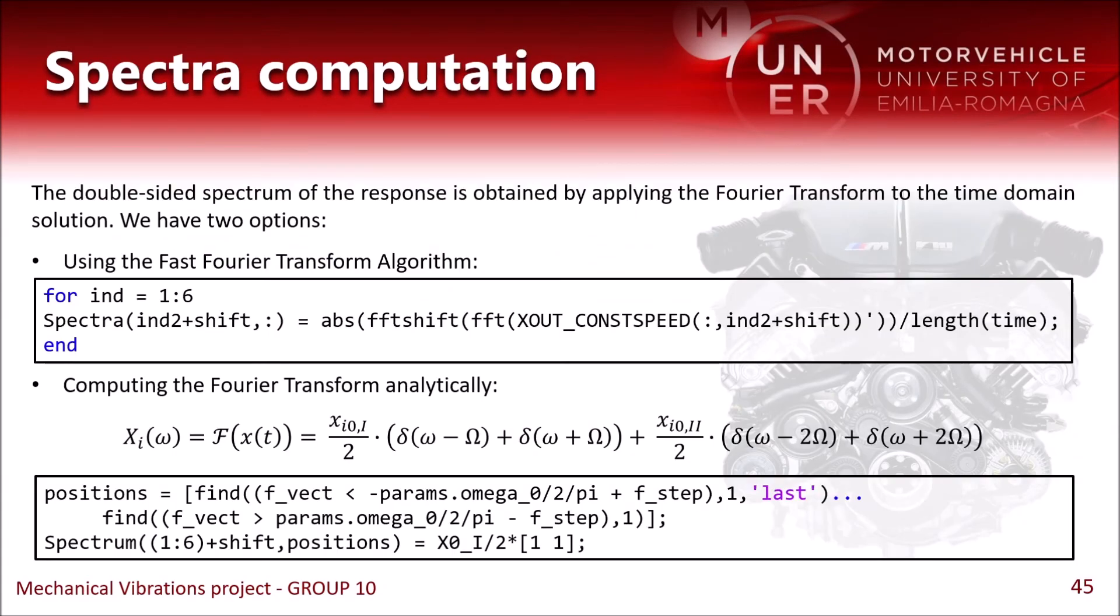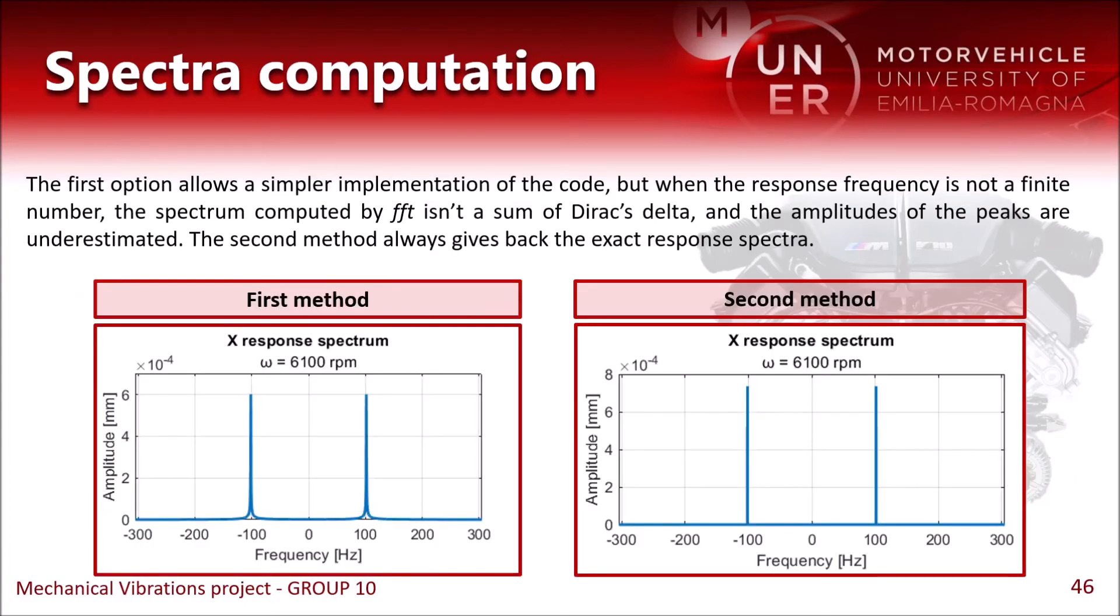To calculate the spectra, we have two possible options. The first one is to simply apply the FFT algorithm, and the second one is to compute the Fourier transform analytically. If we compare the two approaches, we have that the first one is more simple, but will not return the exact spectrum if the frequency that we are studying is a number with infinite decimal places.